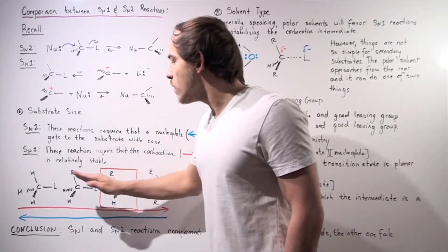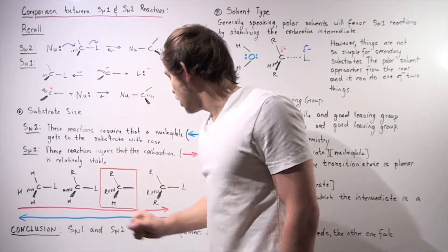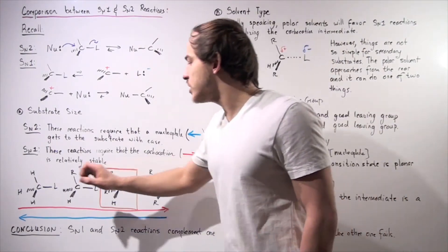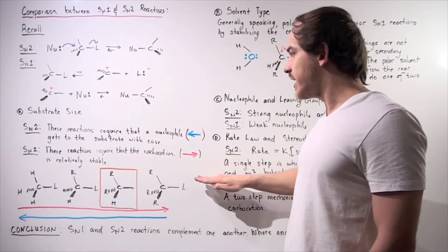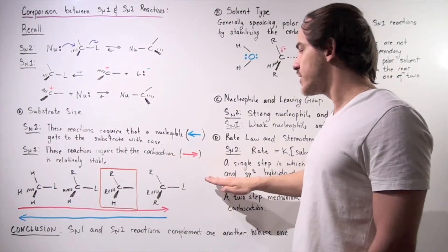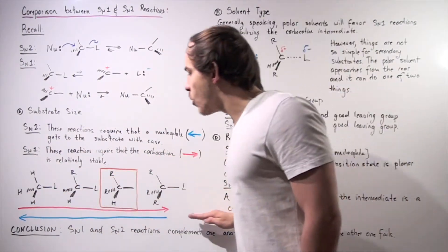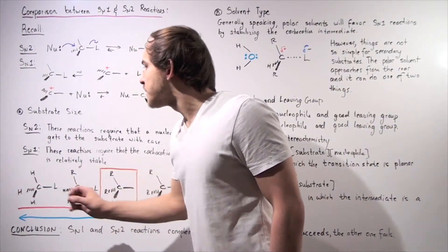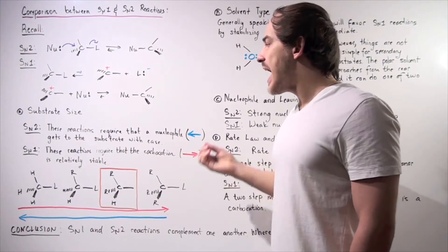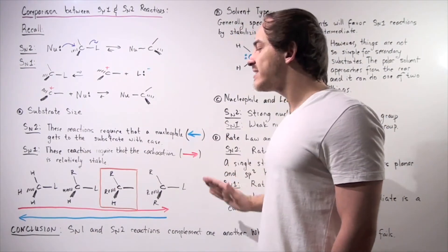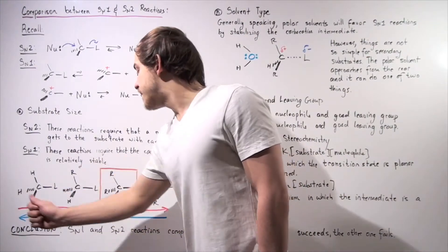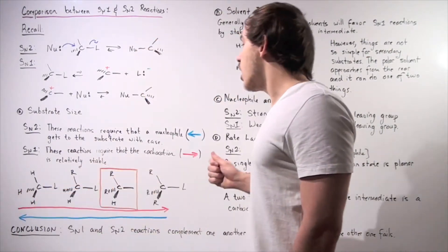So if we go from methyl to tertiary, as we go in that direction our SN1 reaction rates increase. Going backward, our SN2 reaction rates increase. In other words, SN2 reactions are more likely to occur for smaller substrates, while SN1 reactions are more likely for larger substrates.